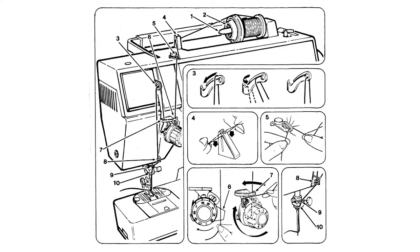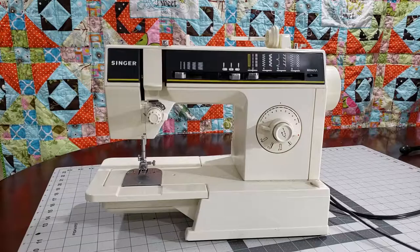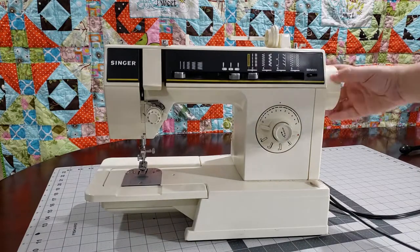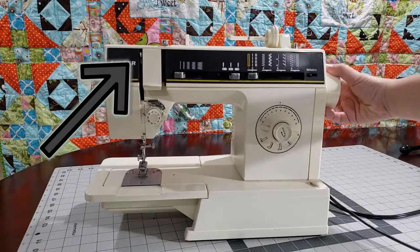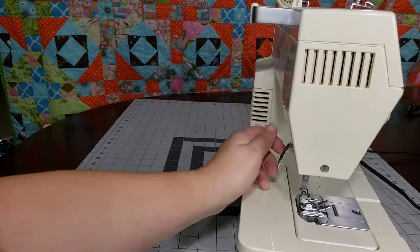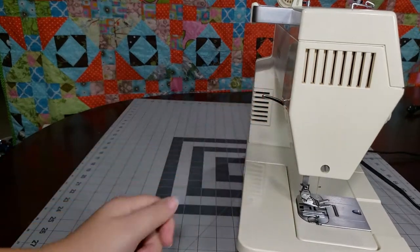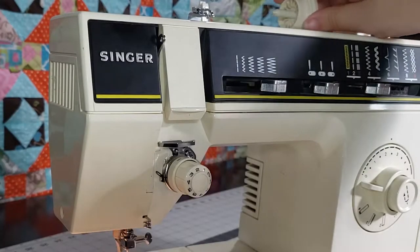Now we're ready to do the upper threading. Turn the hand wheel towards you to move the take up lever to the highest position. Raise the presser foot. Place a spool of thread on the spool pin and slide the spool cap in place.